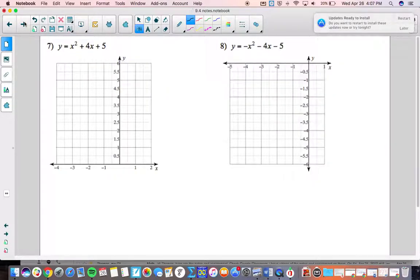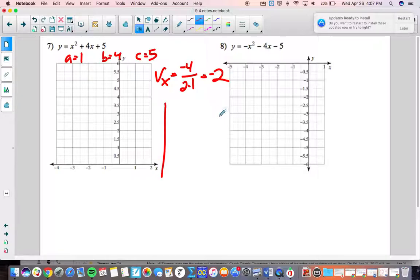Last one, how about number 7. So a is 1, b is 4, c is 5. So the vertex x value is negative 4 over 2 times 1 which is negative 2. So that goes in the center of our table.